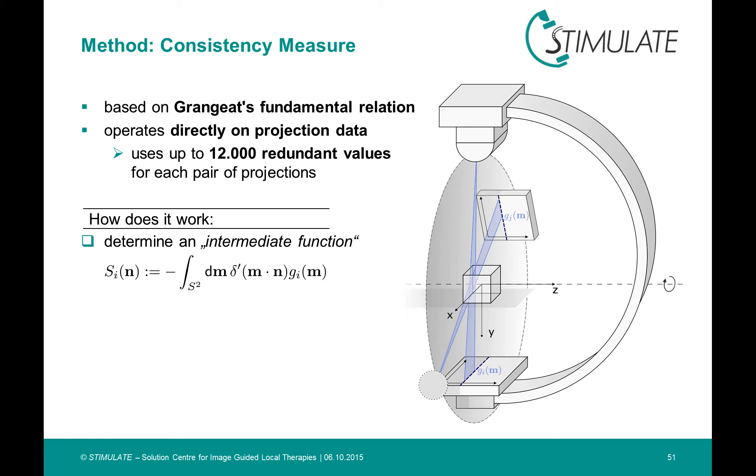Due to the inner product and the delta function argument, only rays which are in a plane with the normal vector n contribute to the integral. The crunch point is, which comes from Grangeat's relation, that the intermediate function is directly connected with the 3D radon transform of the object.